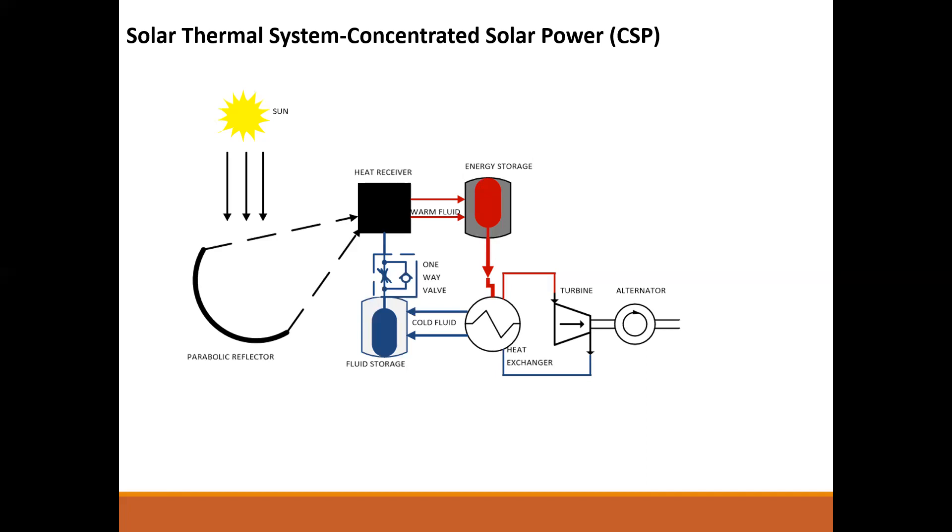Looking further, we have the heat exchanger and fluid storage. Once heat is received, it goes to energy storage and passes through the heat exchanger, then to the fluid storage with a temperature difference. The entire arrangement is a turbine alternator system which runs on heat concentrated from the sun's rays. A CSP system is similar to conventional power systems, except we use the sun to produce heat that drives the turbines.